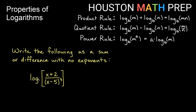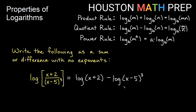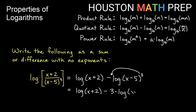For log of the fraction (x+2) over (x−5) cubed: use the quotient rule since we have division inside. This becomes log of (x+2) minus log of (x−5) cubed. Then move the cube out front using the power rule, giving log of (x+2) minus 3 times log of (x−5).